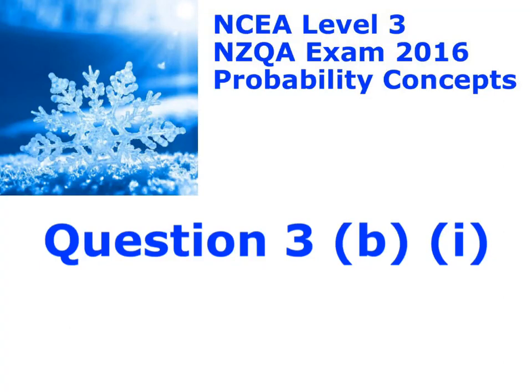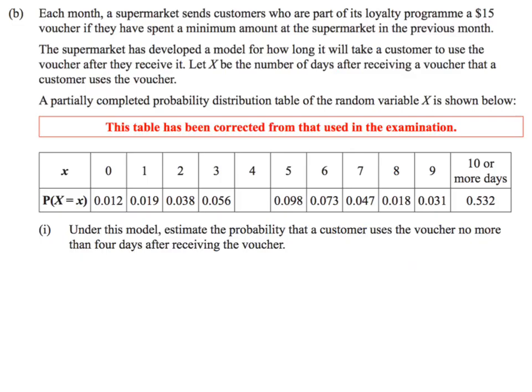Here is question 3b part 1. In this question, it's talking about people who are part of a loyalty program getting a voucher if they've spent a certain amount of money in the past month. They've got a model where X is the number of days after receiving it that they use the voucher. Now, there was a mistake in this question last year but this has now been corrected, so we can go ahead and do it.